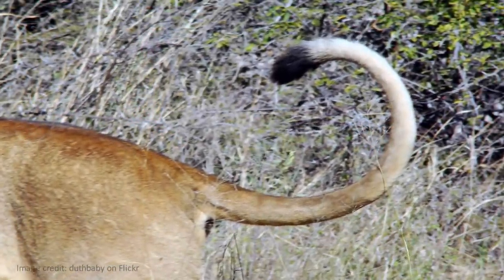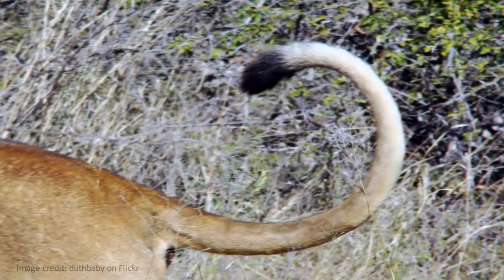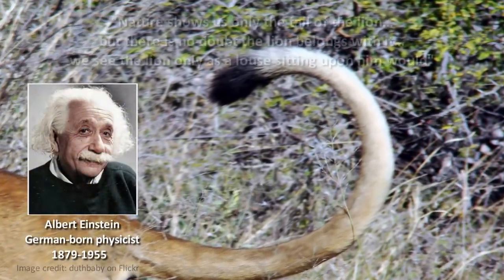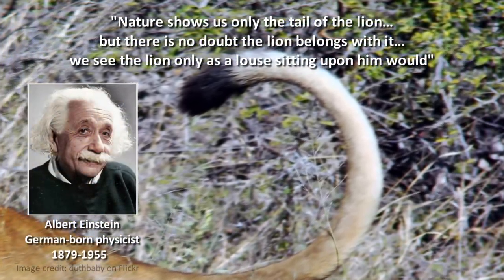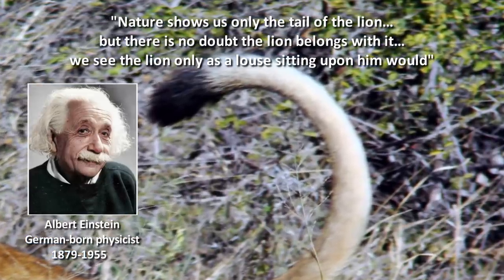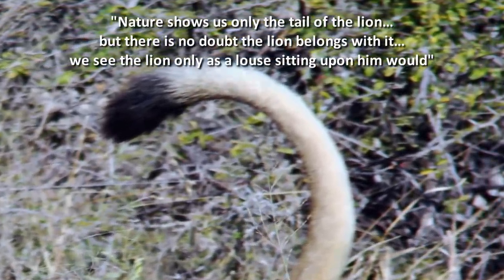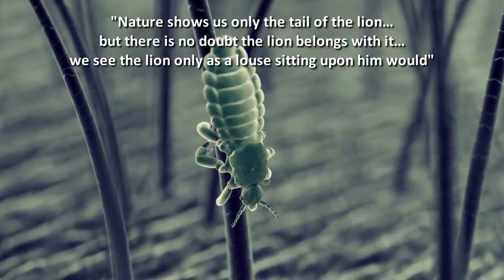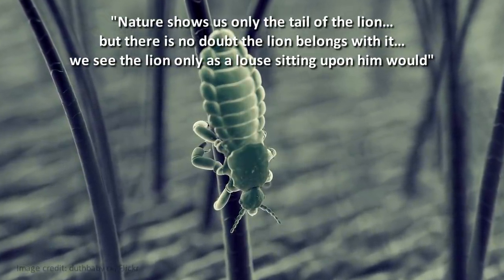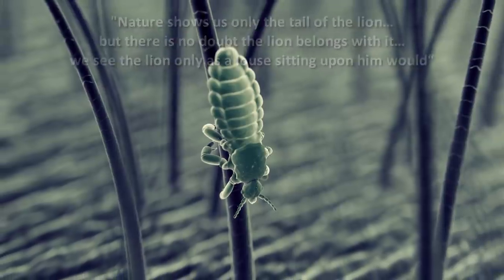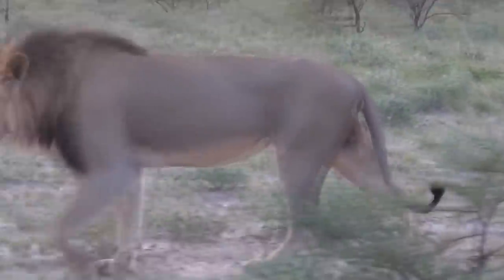There's a lot more physics for us to learn, and the future is probably going to be full of aha moments. Einstein said that nature shows us only the tail of the lion, but there's no doubt that the lion belongs with it, and we see the lion only as a louse sitting upon him would. It's possible we simply have not yet seen the lion that awaits at the end of the tail.